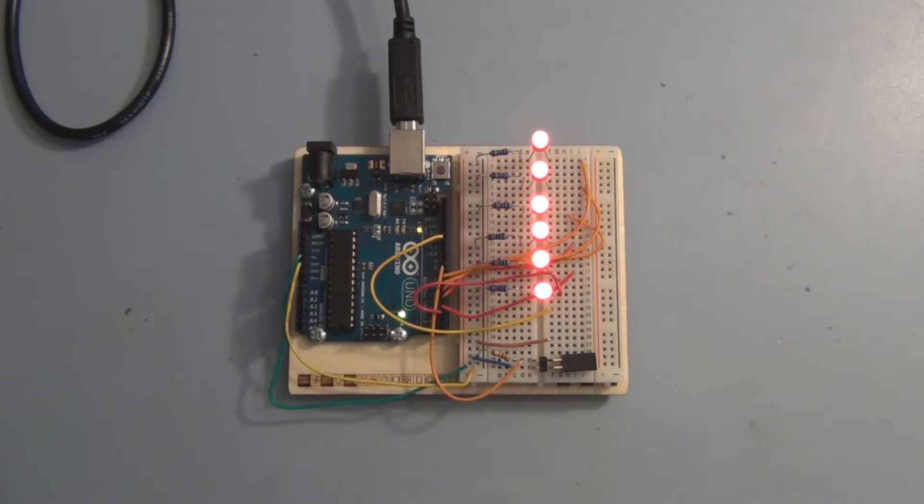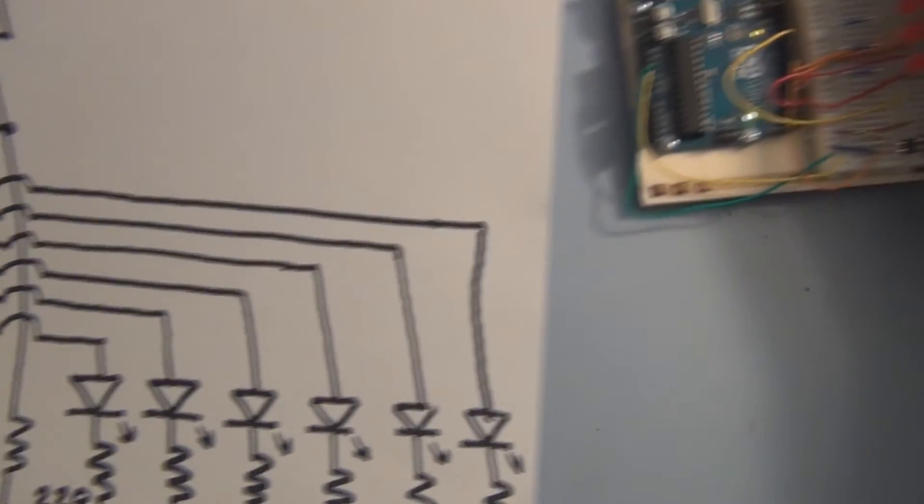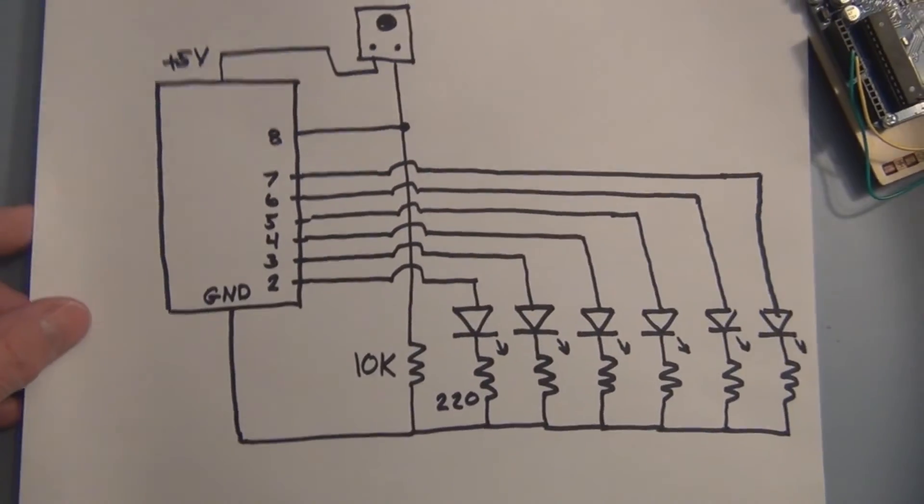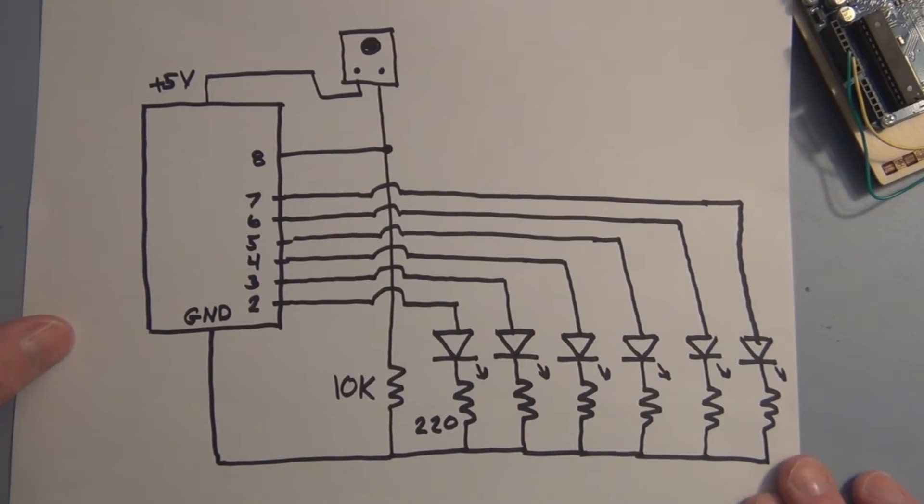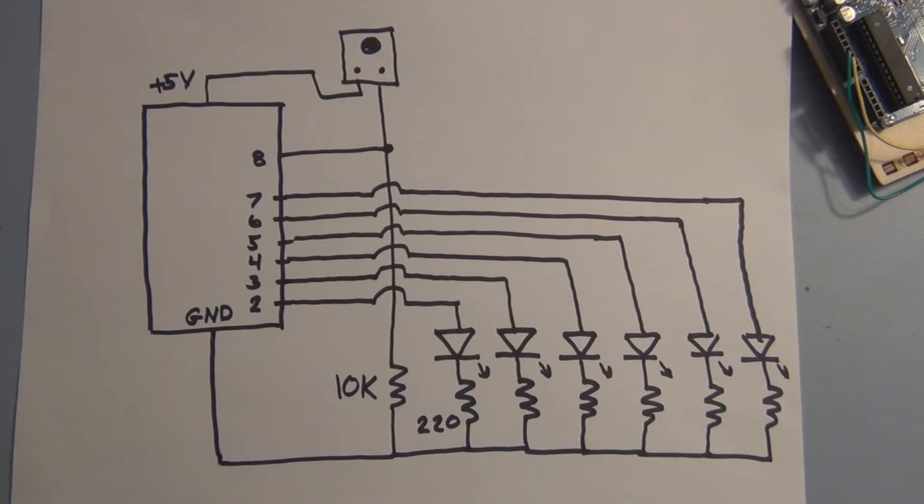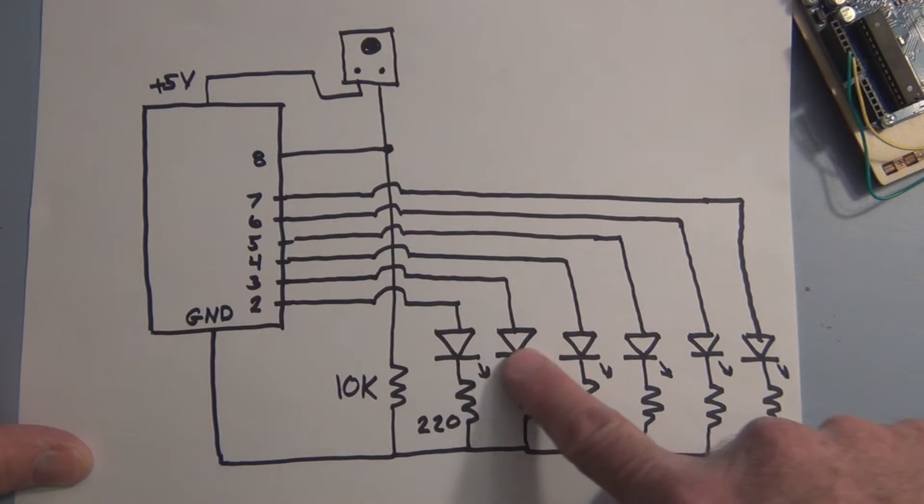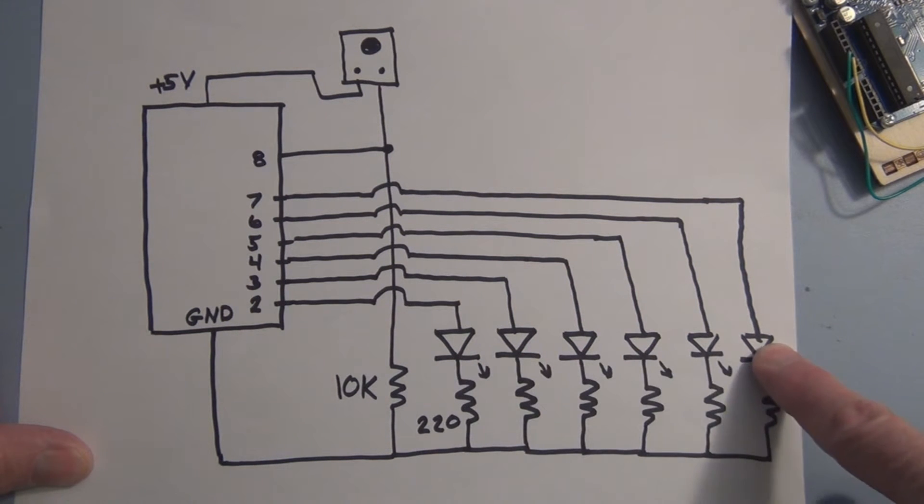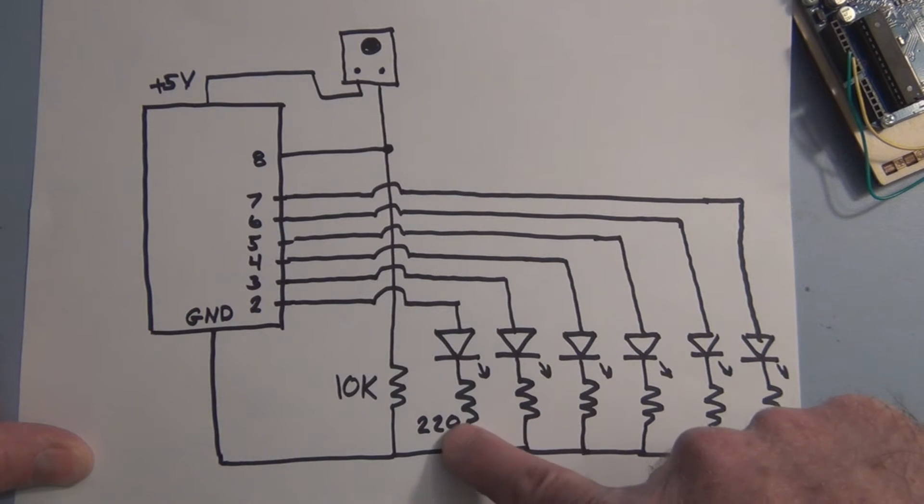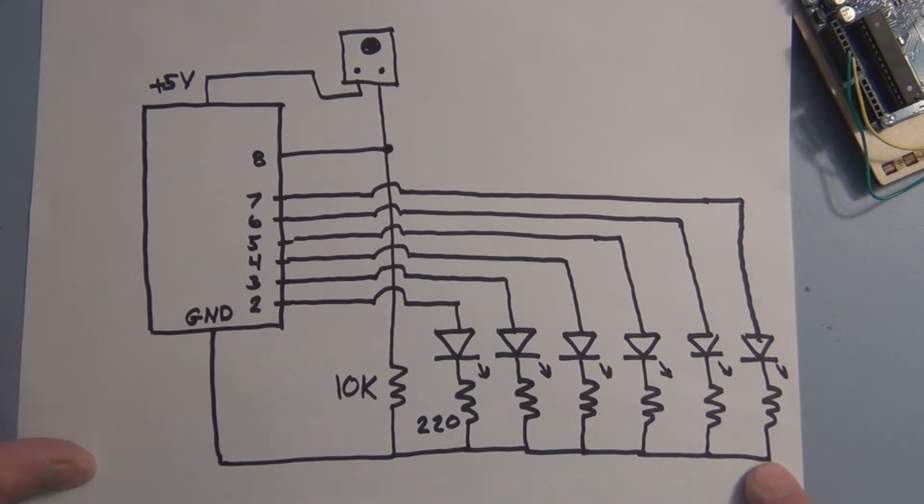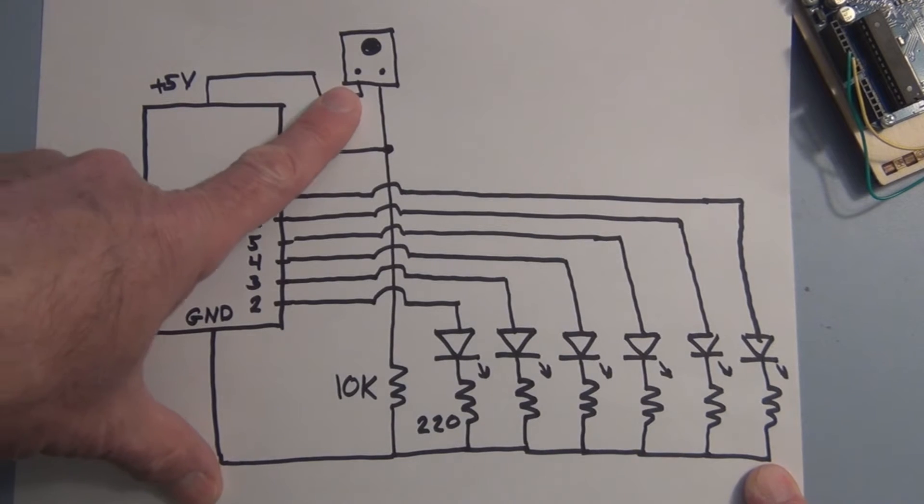Let's take a look at the circuit. Pretty simple circuit. We're using pins two through seven and declaring them as outputs. We have six LEDs tied to those pins through current limiting resistors to ground, 220 ohms, and in addition we have this tilt switch.